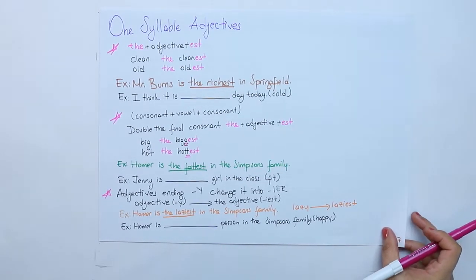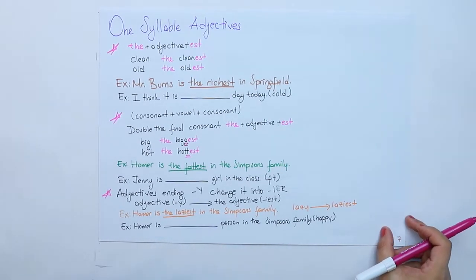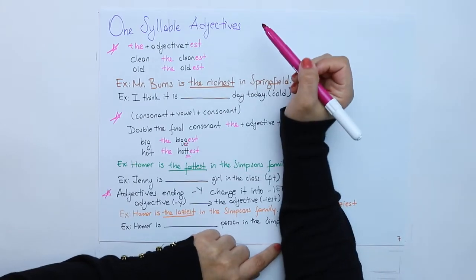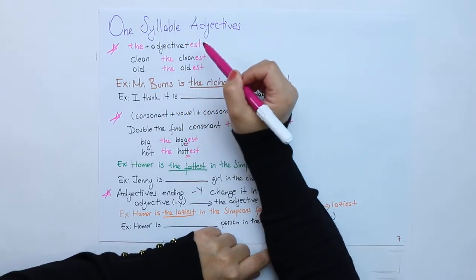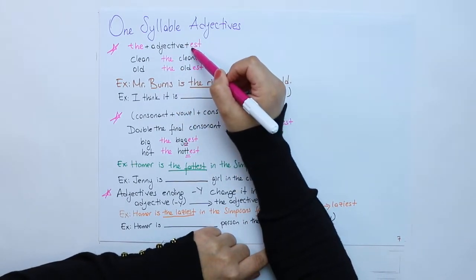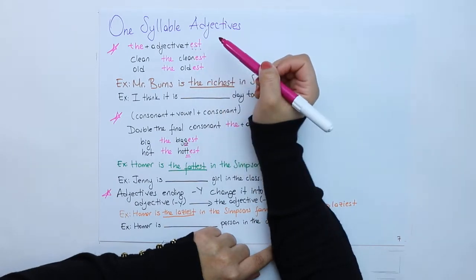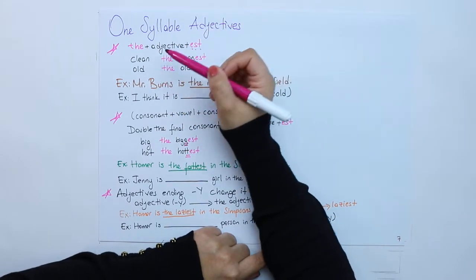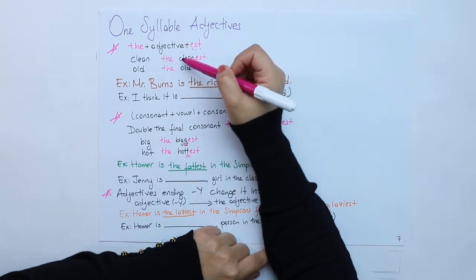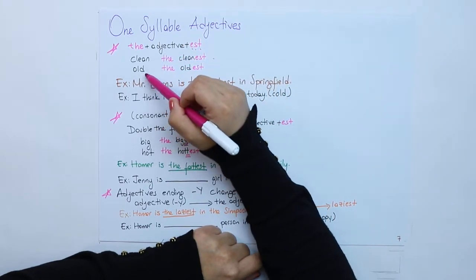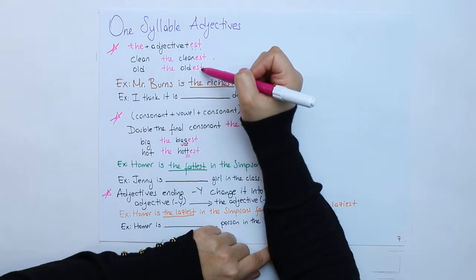We will start with one-syllable adjectives as in the comparative form. THE plus adjective plus E-S-T. Our first example is clean, the cleanest. Old, the oldest.